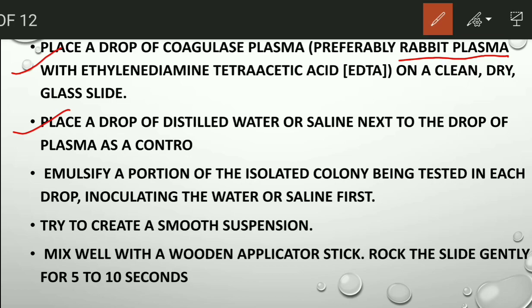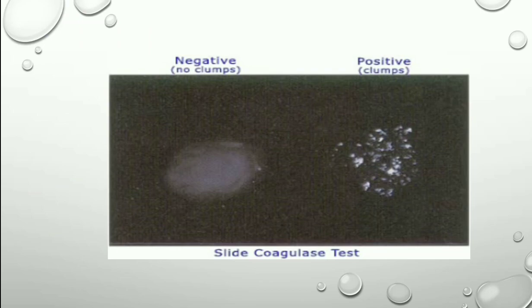Emulsify a portion of the isolated colony being tested in each drop and make a smooth suspension. Mix it with a wooden applicator stick and rock gently for 5 to 10 seconds.